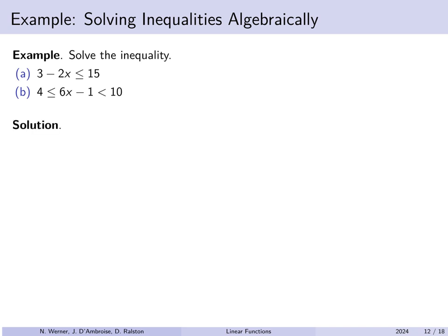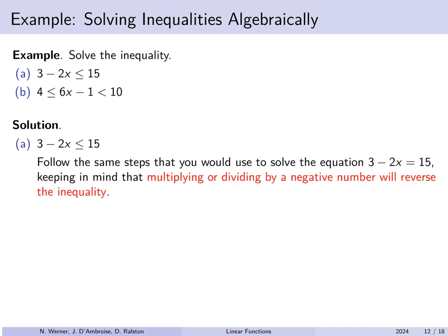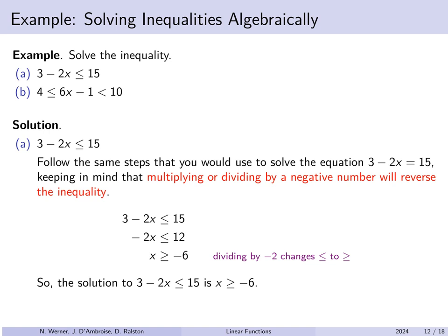For 3 minus 2x ≤ 15, we solve for x the same way we'd solve an equation — with one important rule: if you multiply or divide by a negative number, you must reverse the direction of the inequality. Starting with 3 minus 2x ≤ 15, subtract 3 from both sides — no flip needed for addition or subtraction. Then divide by negative 2, which requires flipping the inequality. The solution is x ≥ negative 6, or as an interval, [−6, ∞) — square bracket because we include negative 6, open parenthesis for infinity.